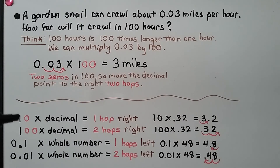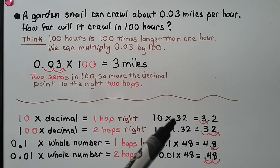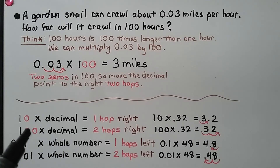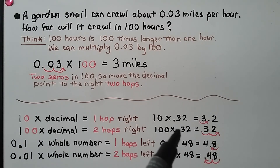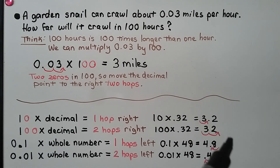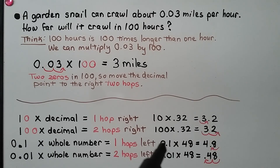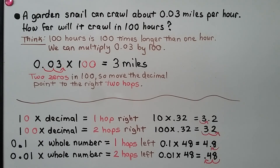So what we've done is: when we have ten times a decimal, the decimal point moves one hop to the right. So if we have ten times thirty-two hundredths, the decimal point is going to move one hop to the right in between the three and the two — we'll have three and two tenths. If we have one hundred times a decimal, the decimal point is going to move two hops to the right — one hundred times thirty-two hundredths goes from the left side of the three, one, two hops, to the right side of the two — we'll have thirty-two whole. When we have one-tenth times a whole number, the decimal point is going to do one hop left — one-tenth times forty-eight whole — the decimal point is on the right side of the eight, moves one hop left — we'll have four and eight tenths. When we have one-hundredth times a whole number, the decimal point is going to do two hops left — from the right side of the eight, one, two hops — it'll be in front of the four on the left side — we'll have forty-eight hundredths.